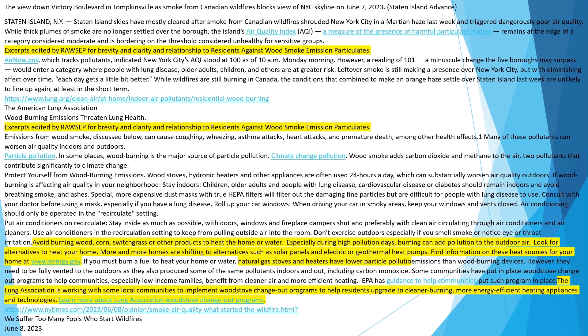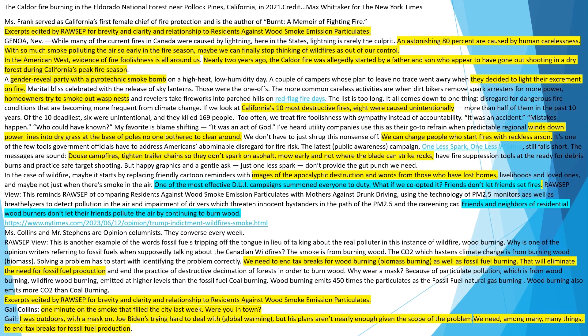Roll up your car windows. When driving in smoky areas, keep your windows and vents closed. Air conditioning should only be operated in the recirculate setting. Stay inside as much as possible with doors, windows, and fireplace dampers shut, and preferably with clean air circulating through air conditioners and air cleaners. Use air conditioners in the recirculation setting to keep from pulling outside air into the room. Don't exercise outdoors, especially if you smell smoke or notice eye or throat irritation. Avoid burning wood, corn, switchgrass, or other products to heat the home or water.